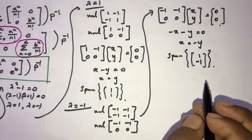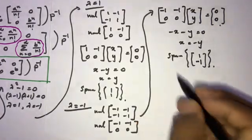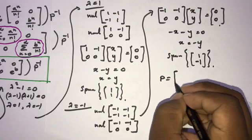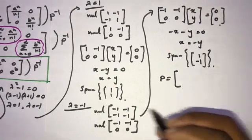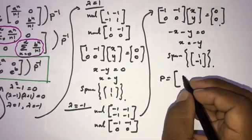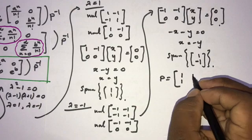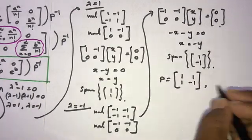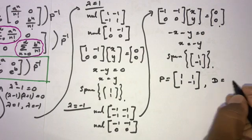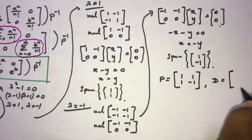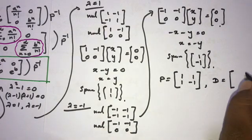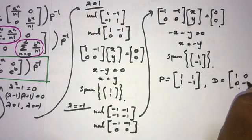Now we have the corresponding eigenvectors, so we can write P equals [[1, 1], [1, -1]], and the diagonalizable matrix D has eigenvalues on the diagonal: D equals [[1, 0], [0, -1]].